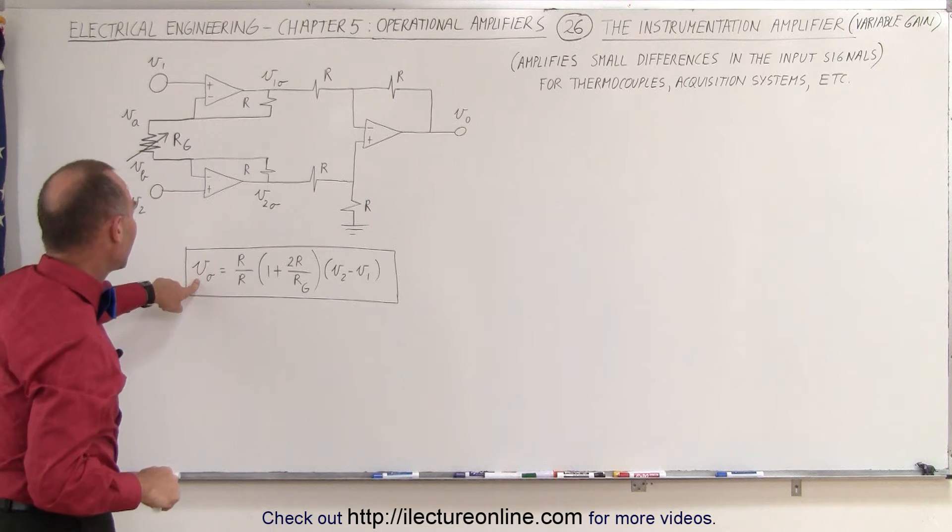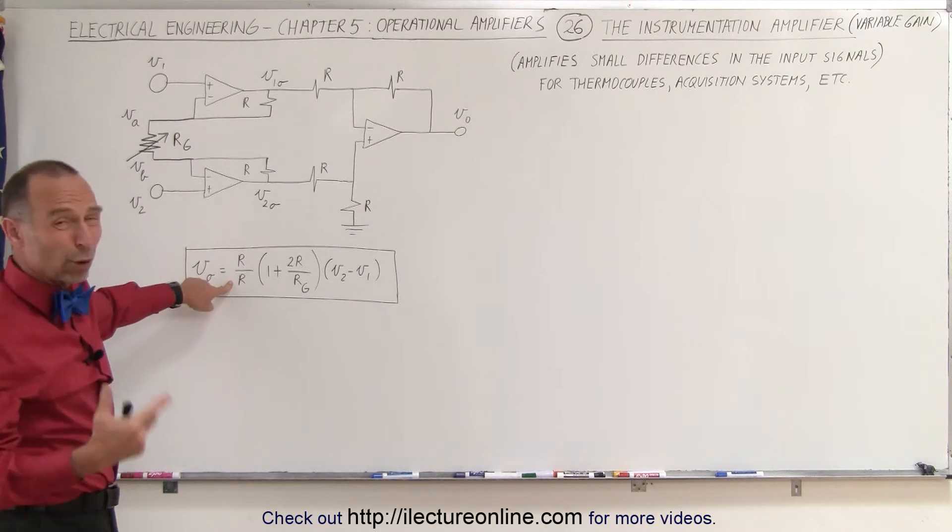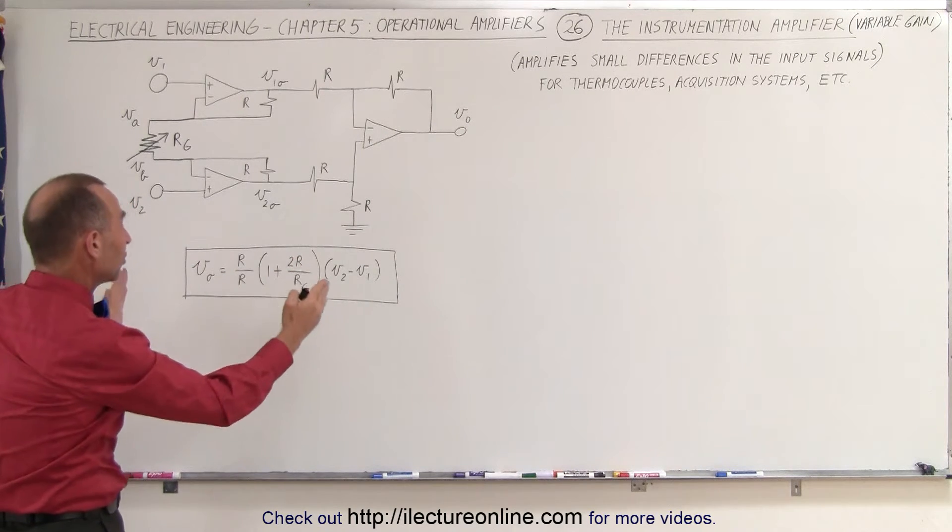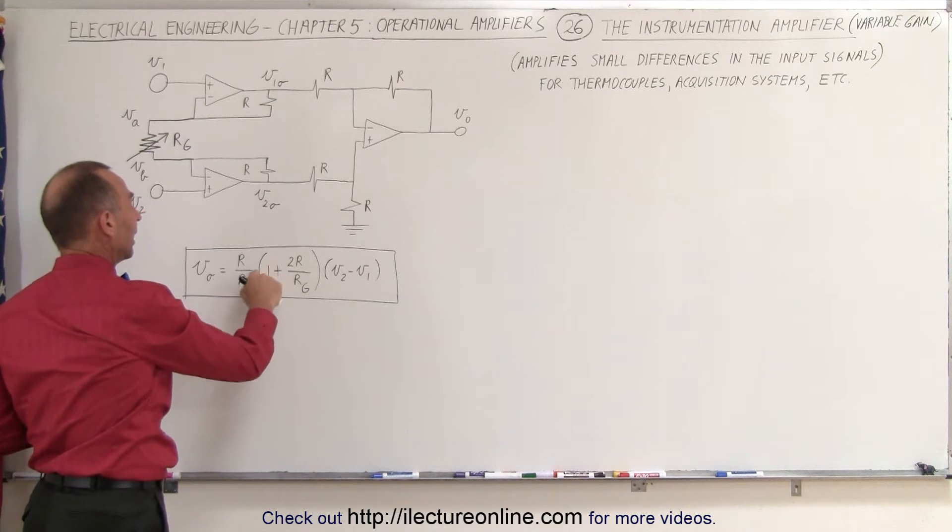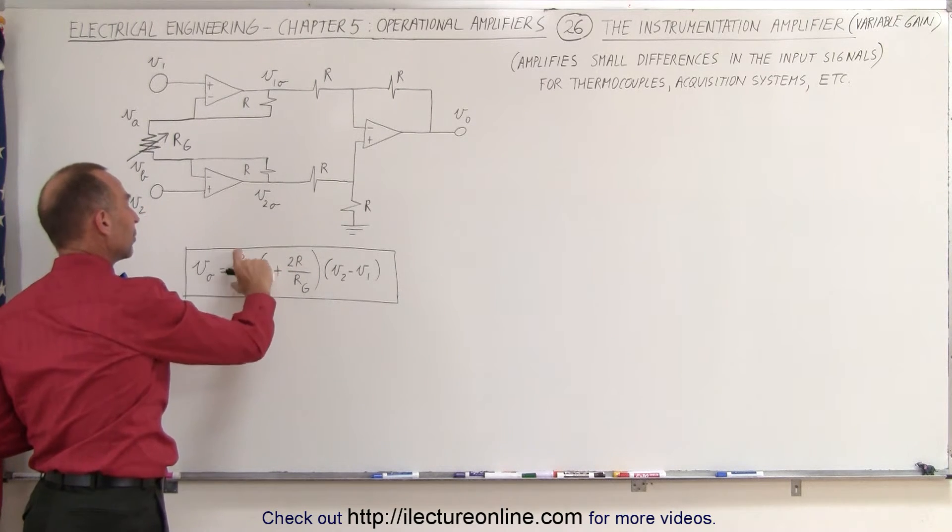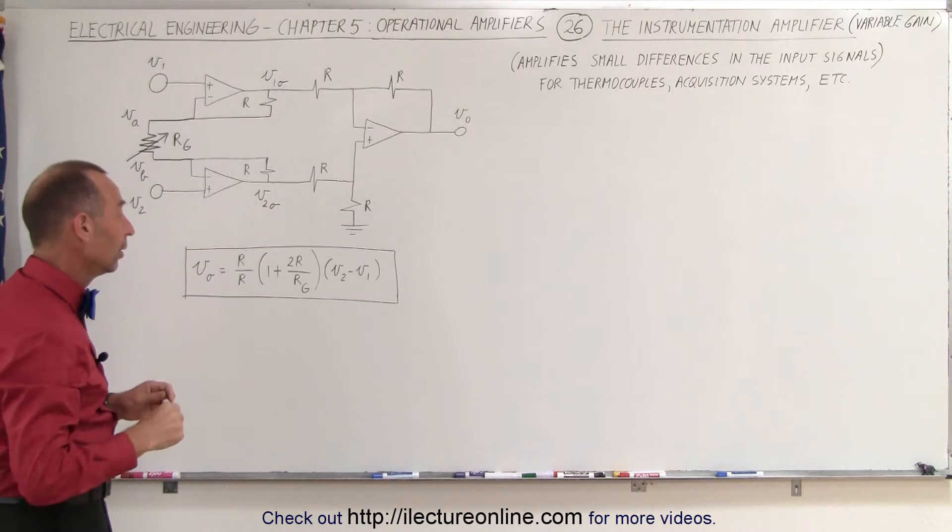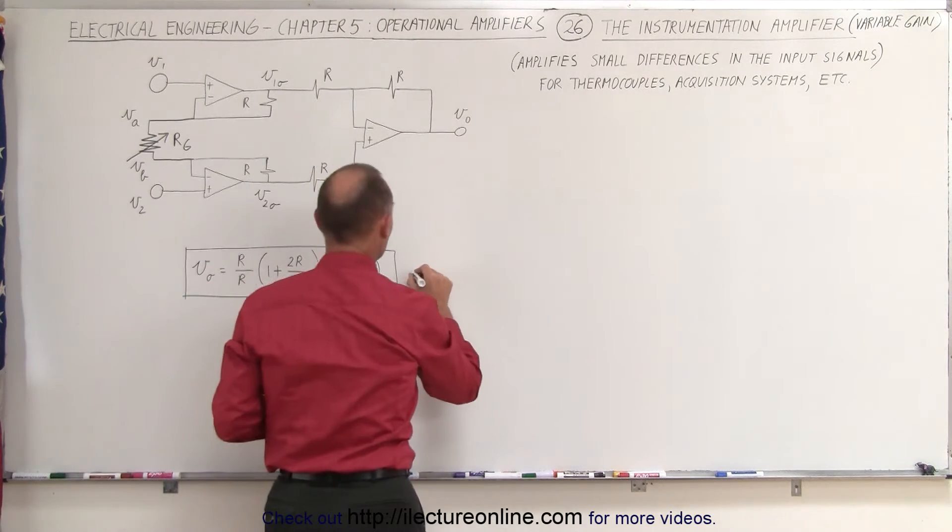Now the output here simply becomes equal to this. I just wrote it like this so you can see that it's exactly the same as what I had before, but instead of having an R3 there, we simply have an R, and instead of having an R1 and R2 here, we simply have an R as well, which means that this equation now becomes a lot simpler.